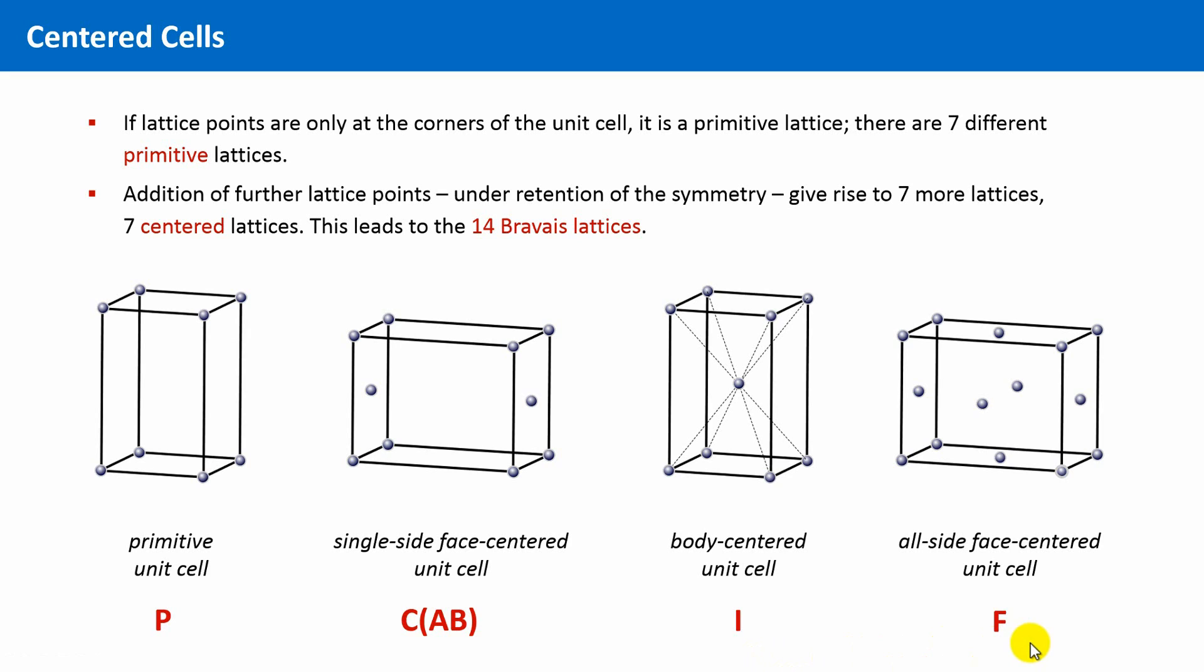I mentioned earlier that there are seven primitive lattices, and if we account for centerings, there are seven more lattice types, 14 in total. But this is not understandable at first sight.